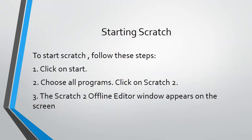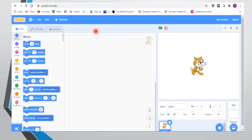Now, starting Scratch. After downloading Scratch, here is how to open it. To start Scratch, follow these steps: Click on Start — you know the Start button in the corner of your desktop screen. Click that Start button, then choose All Programs. From there, click on Scratch 2, and the Scratch 2 offline editor window will open on your screen — like this window here.